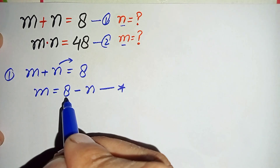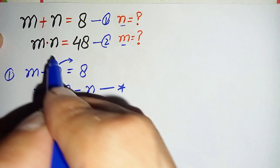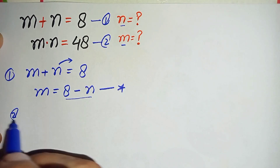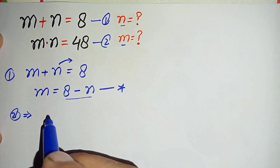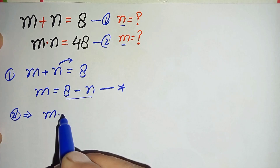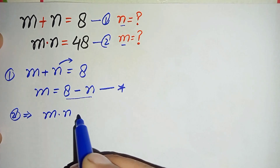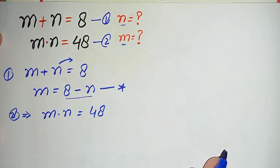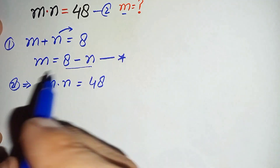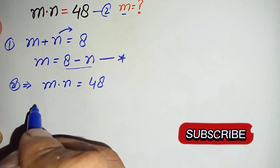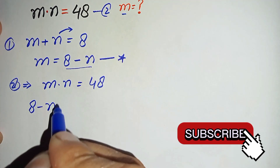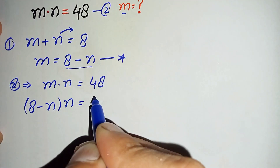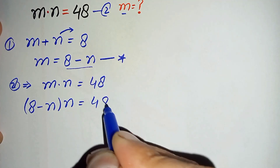Now we substitute the value of m, which is 8 minus n, into equation number two. Equation two is m times n equals 48, so substituting gives us 8 minus n times n is equal to 48.